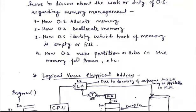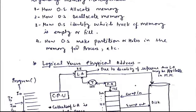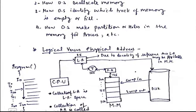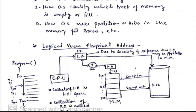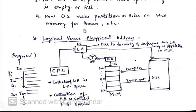Another important duty of the operating system is to make a partition or a hole in main memory. In a multi-programming environment, there are many processes in our secondary storage. The partition will be made by fixed-size partitions or variable-size partitions. The processes are available in RAM in contiguous fashion or non-contiguous fashion. These are all decisions made by the operating system.